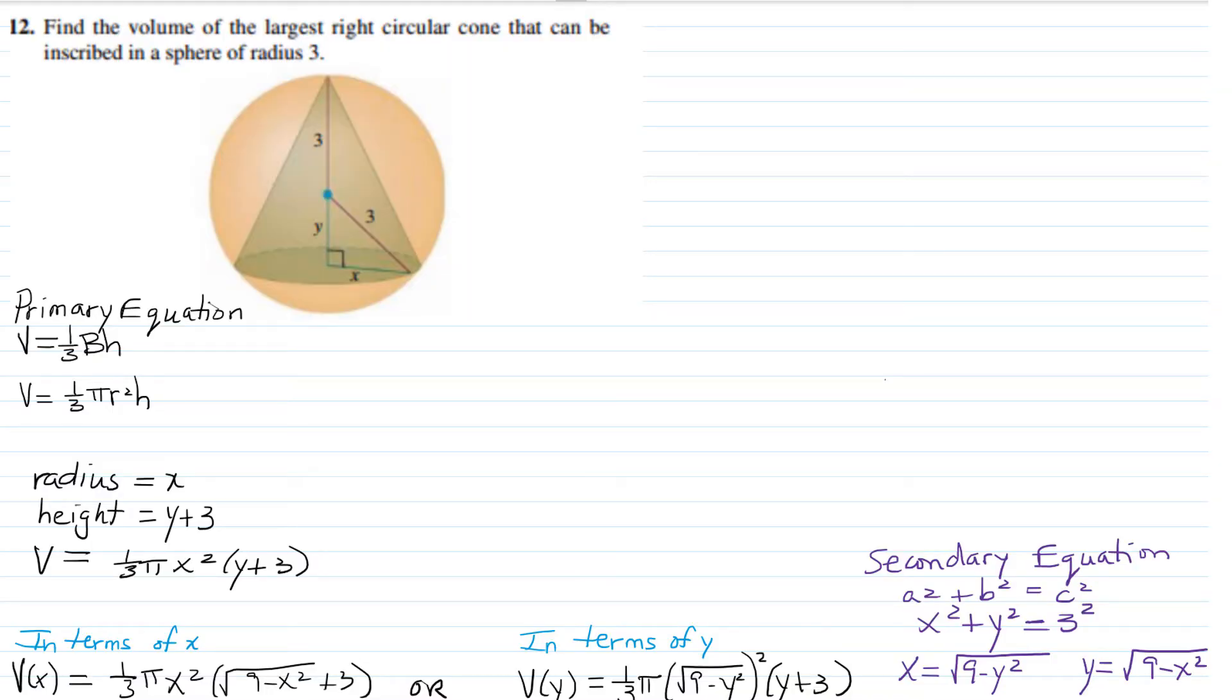Hi, I'm Ms. Hearn. Let's get started. In this exercise, we're going to find the volume of the largest right circular cone that can be inscribed in a sphere of radius 3, and we're given a diagram.